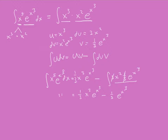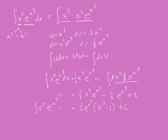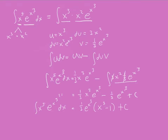So the integral of our original problem equals 1/3 x cubed e to the x cubed minus 1/3 e to the x cubed — plus c! Don't forget to add c. And factoring gives us 1/3 e to the x cubed times (x cubed minus 1) plus c, which equals the integral of x to the power of 5 times e to the x cubed dx. There's your answer.